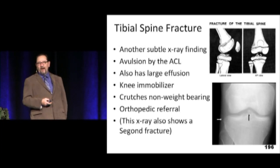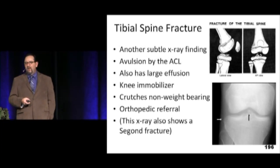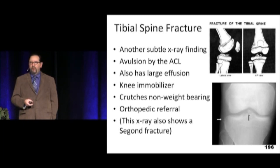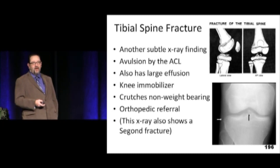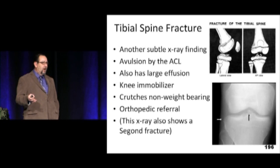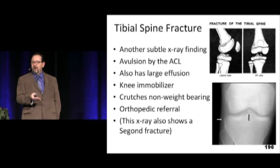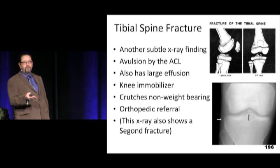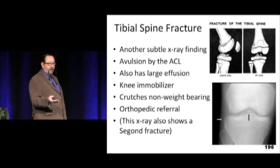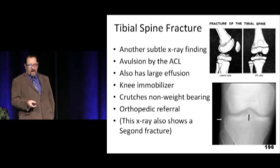A tibial spine fracture — look for them when you get knee films. It's usually an avulsion fracture pulled off by the ACL. The beauty of this is that if you tear the ACL in the middle of the band, ACLs don't heal — they have to be repaired. But bone does heal. So if you have a sizable tibial avulsion fracture that can be tacked down, it allows bony healing, which is much better than an ACL repair. It's relatively uncommon though, and along with the Segond fracture, these are really the only bony findings you're going to find in acute knee injuries.